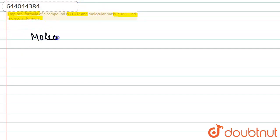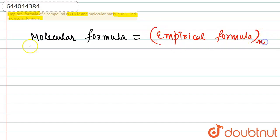So if we use the expression for the molecular formula, that is equal to empirical formula into n. Empirical formula into n, so we just have to find out. Empirical formula is given to us, we need to find the value of n first.